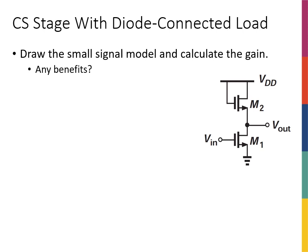Let's solve another example. I still have my common source amplifier, but instead of the resistive load RD, I've put M2, which is another NMOS with the drain and gate connected to VDD and the source connected to Vout. Let's calculate the gain, see how the small signal model looks, and answer the question of any benefits to this circuit.